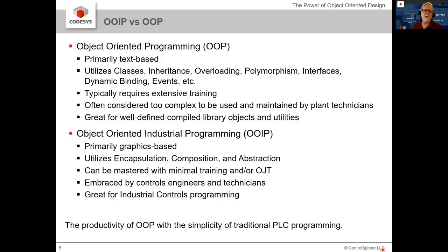When I go out and ask programmers what object-oriented programming is, I tend to get two very different answers. Someone from an IT background will talk about classes, inheritance, overloading, polymorphism, and all that kind of thing. Somebody with an OT background is more likely to say something like creating function blocks, or declaring function blocks inside other function blocks. To keep these two interpretations straight, I use the IT definition for object-oriented programming, and I use the new term 'object-oriented industrial programming' for the OT definition.